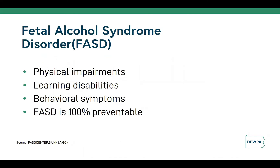Fetal alcohol syndrome disorder is a disorder that occurs when the mother drank alcohol during pregnancy and affects fetal development in utero. FASD causes physical, learning, and behavior impairment at varying developmental levels. Some examples include low birth weight, hyperactive behavior, poor memory, speech and language delays, low IQ, sleep and sucking problems in the baby, vision or hearing problems, shorter than average height, and small head size. According to the CDC, there is no proven safe amount of alcohol to drink during pregnancy.